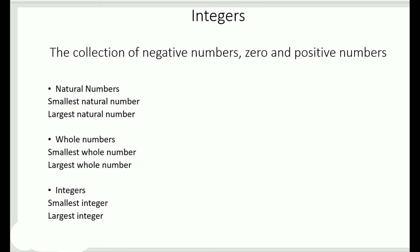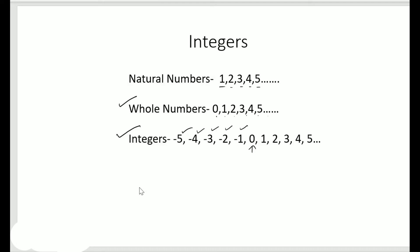Integers is the collection of negative numbers — that means numbers with a minus sign — zero, and positive numbers. Why do we call them positive numbers? Writing one, two, three, four, five can also be written as plus one, plus two, plus three, plus four, plus five. So positive integers can be written with or without the plus sign, but for negative integers the minus sign is a must.